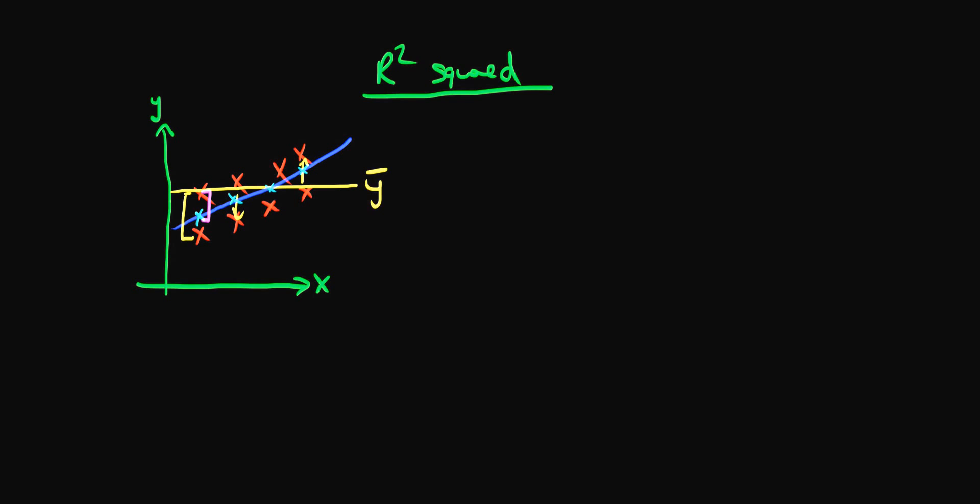A measure of how well our model is explaining the data is something we call the explained sum of squares, which is the sum from i equals 1 to N of our fitted values of Y minus the average values of Y, all squared. We square the value so that we treat both deviations below and above the mean equally.